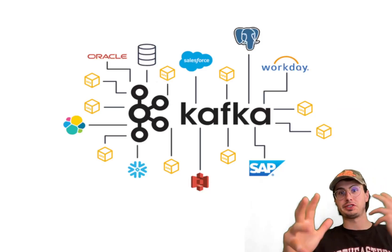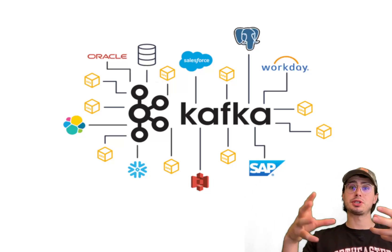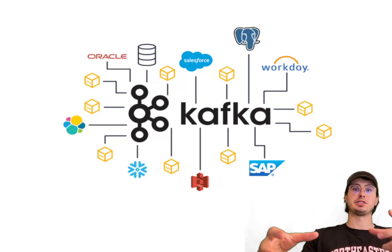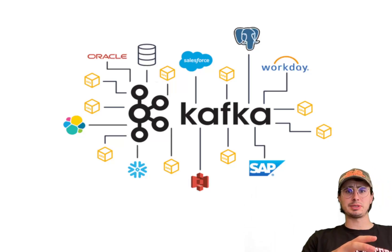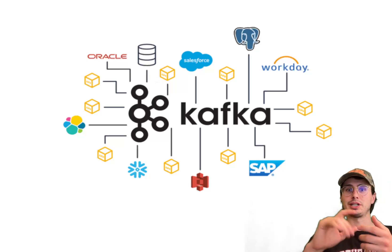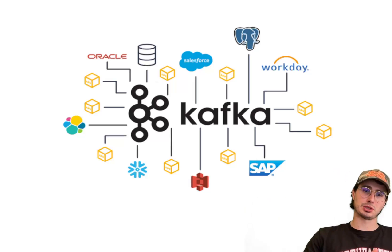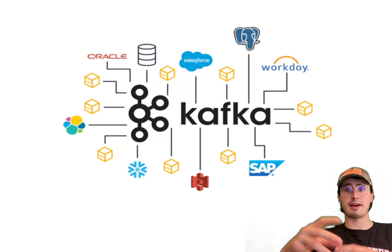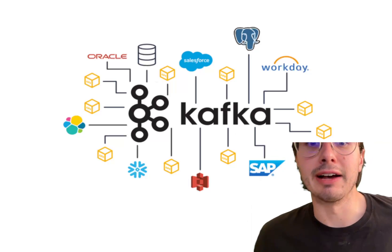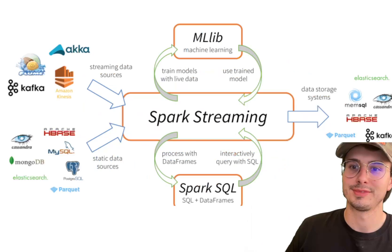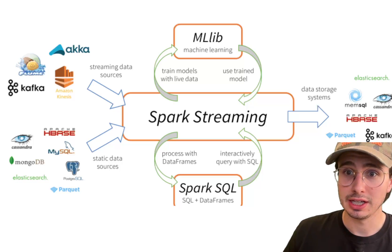Kafka provides different APIs for both message streaming and data processing. The Producer and Consumer API forms the backbone of Kafka's data ingestion and consumption, allowing developers to publish or subscribe to messages and topics. The Kafka Streams API builds on those concepts, enabling more sophisticated streaming applications that can read from one or more Kafka topics, process the data, and write results to other topics. Additionally, the Kafka Connect API provides a standard way of integrating external data systems with pre-built connectors for databases, file systems, and other data sources.